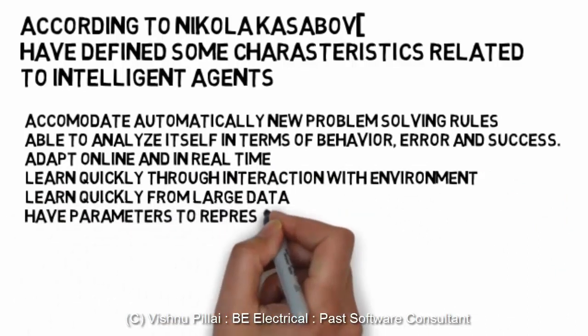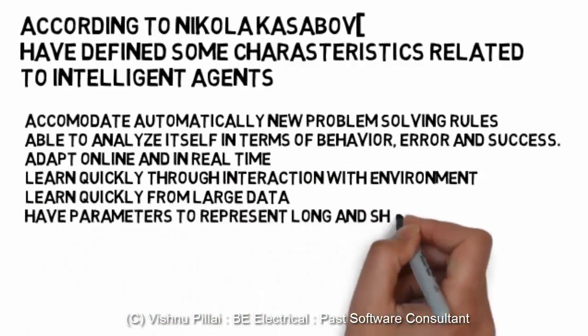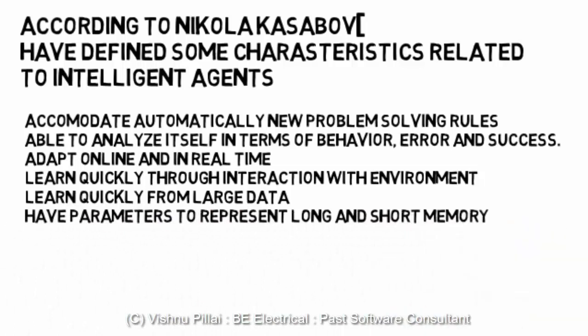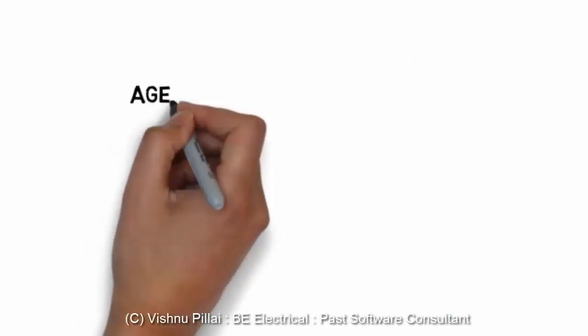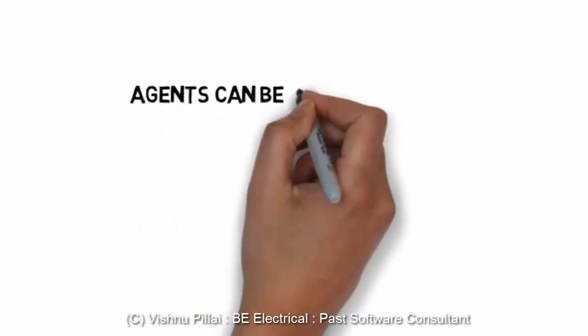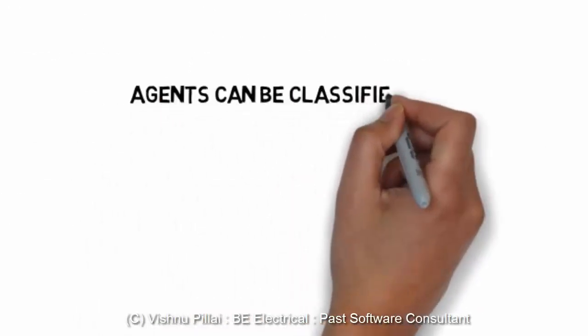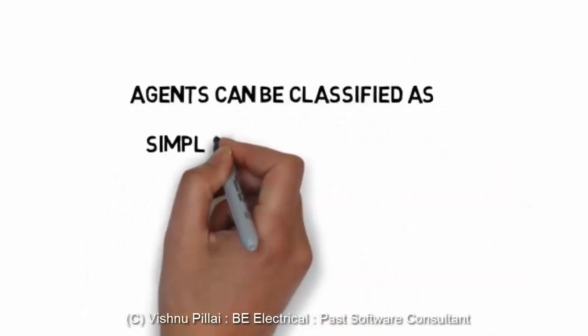Agents should learn quickly from large data and have parameters to represent long-term and short-term memory — they should have memories similar to humans. They should also be self-learning and able to act on the environment to achieve their goals.